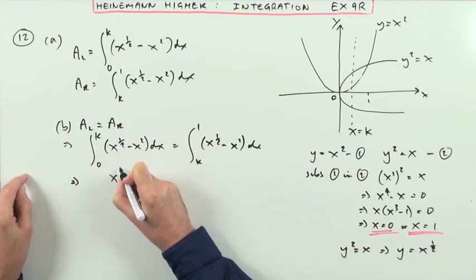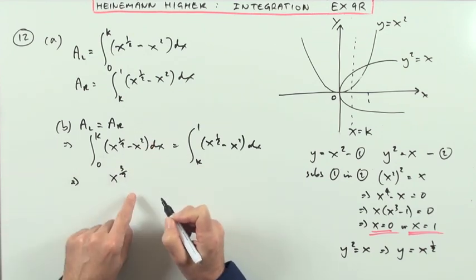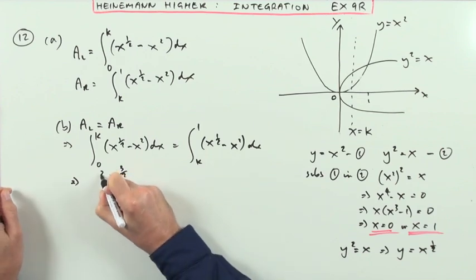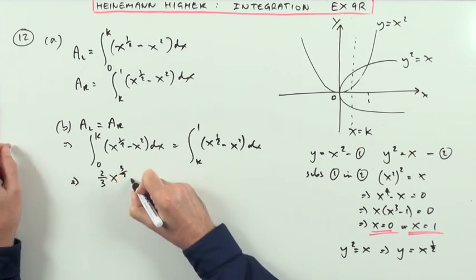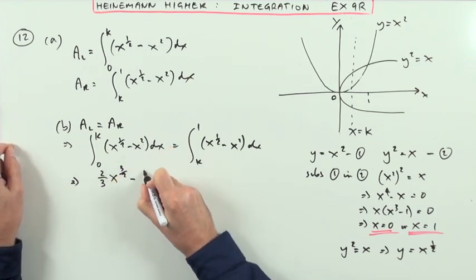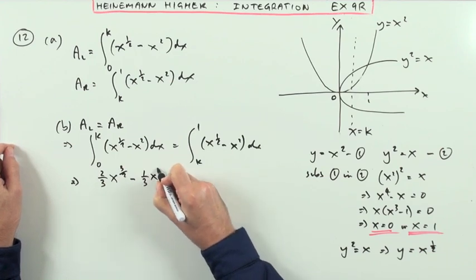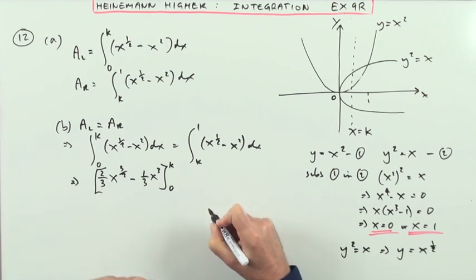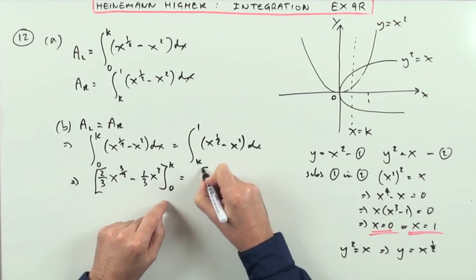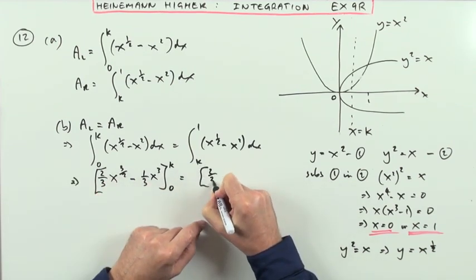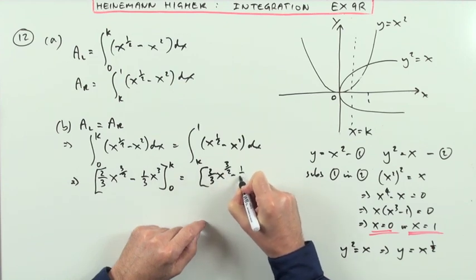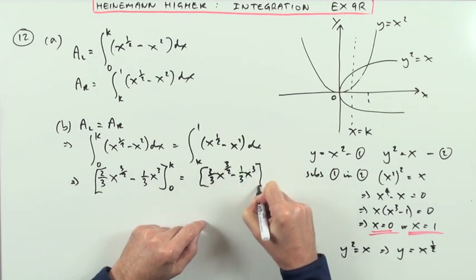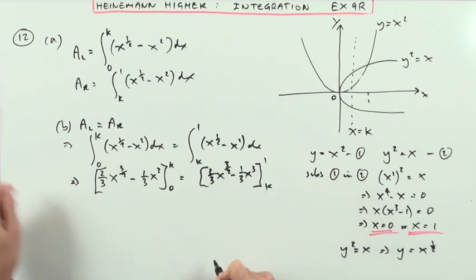So just integrating that. So I have, add 1 to the power, 3 upon 2. Divide by that power, but instead of writing over 3 upon 2, multiply by the reciprocal. Minus, add 1 to the power 3. Divide by that. So I've got x cubed. Evaluate that at k. Take away the value at 0. Equals. Other side is going to be exactly the same. 2 thirds x to the 3 upon 2 minus 1 third x cubed. Evaluated at 1 and k.